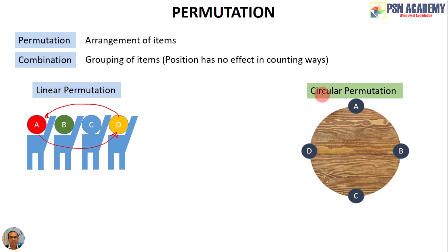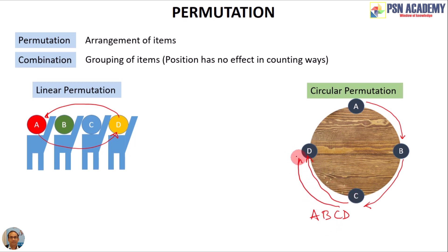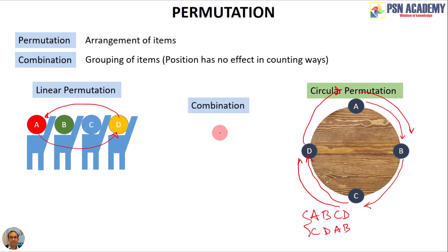We have another type called circular permutation, where items A, B, C, and D are in circular positions around a round table. The difference from linear permutation is that if you start from A, then B, C, D follow. If you start from C, then D, A, B follow — giving arrangements like ABCD and CDAB. So we get two arrangements just by changing the starting point.